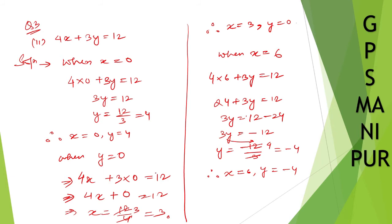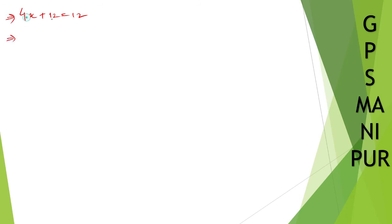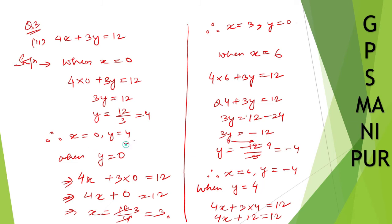So let us take the next space here. When y is equal to 4, then 4x plus 3 into 4 is equal to 12. So 4x plus 12 is equal to 12, giving 4x is equal to 0, so x is equal to 0. I think we have found out this one already, so sorry — this is a duplicate solution.